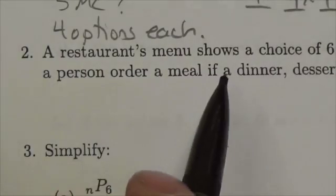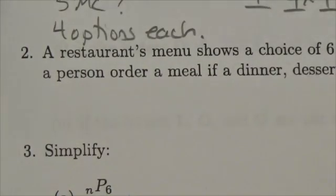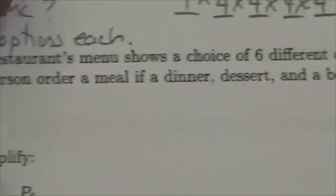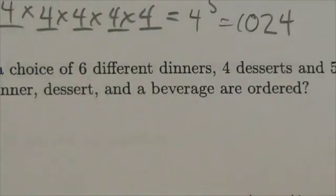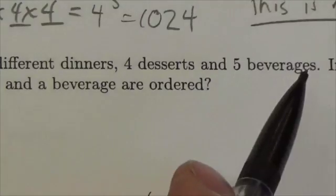Hi everybody, this is a pretty standard question in the Perms and Coms chapter. A restaurant's menu shows a choice of six different dinners, four desserts, and five beverages.